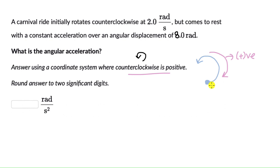We know the initial angular velocity, that is 2 radians per second. We know the final, it comes to rest, this is 0.